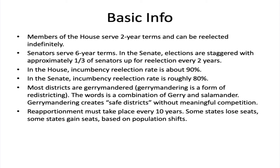Members of the House serve two-year terms and can be re-elected indefinitely. Senators serve six-year terms, also indefinitely. In the Senate, elections are staggered, with approximately one-third of senators up for re-election every two years. In the House, the incumbency re-election rate is about 90%, meaning roughly 90% of sitting members who run again get re-elected. In the Senate, the incumbency re-election rate is roughly 80%.